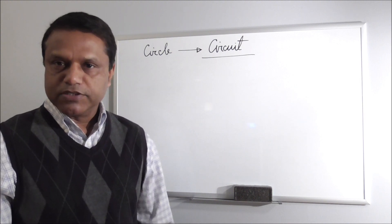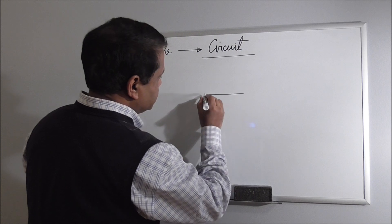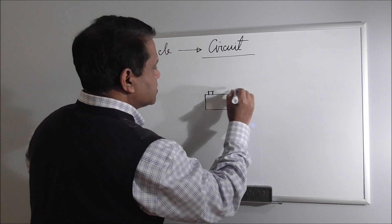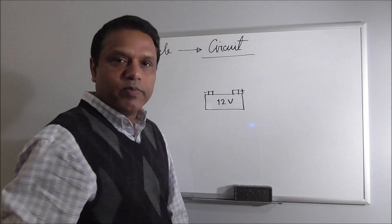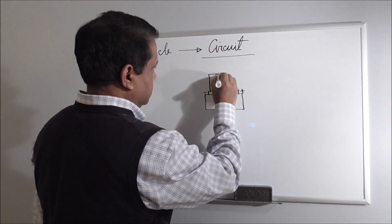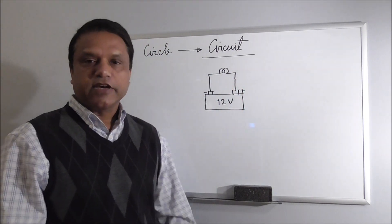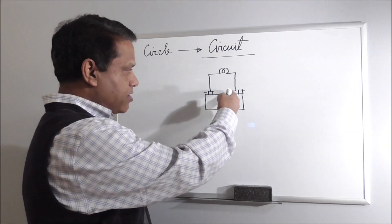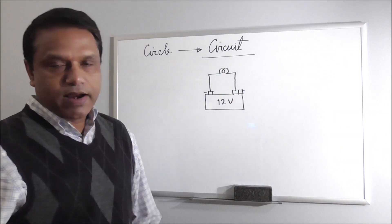Let's look at a very simple circuit made of a battery and a simple light bulb. If we draw the battery here — this is the positive terminal, this is the negative terminal — let's assume this is a 12 volt battery. And if we attach a light bulb with it, we have formed a circuit, because there is a circular path for current to flow. In this circuit, current will flow from positive to negative terminal, but actually electrons will flow the other way. We have learned that in our previous videos.